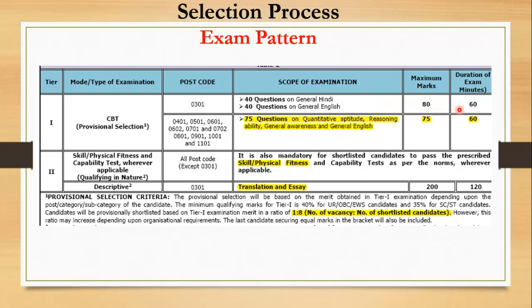For other posts, there will be 75 questions covering General English, Reasoning Ability, Quantitative Aptitude, and General Awareness, with a maximum of 75 marks and a duration of 60 minutes. This is only the Tier 1 exam. Those selected in Tier 1 will be shortlisted for Tier 2 in a ratio of 1:8 — meaning if there is one vacancy, eight candidates will be shortlisted. This ratio can be increased depending on organizational requirements.